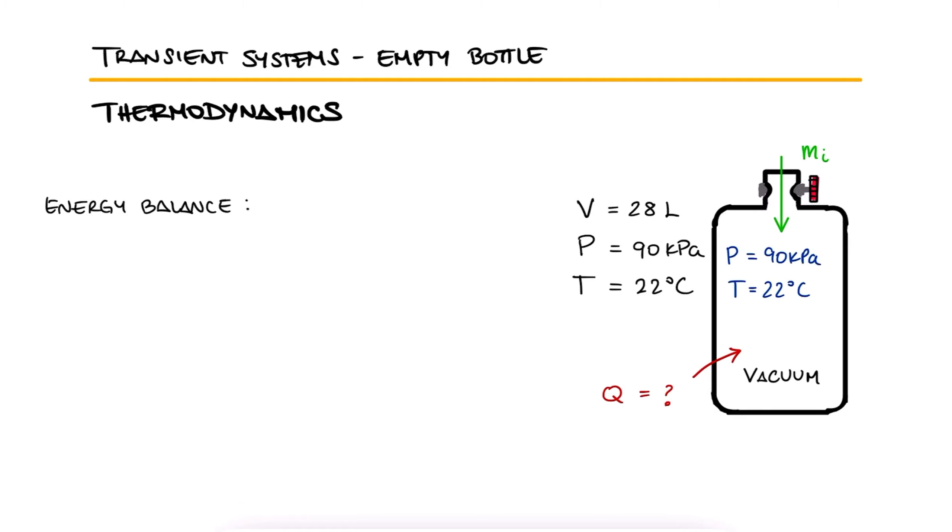The energy balance equation tells us that the energy change is equal to the final energy minus the initial energy. The energy change is the heat that went in, assuming it went in for now, plus the mass that went in with its specific enthalpy. The final energy is the final mass M2 times its specific internal energy, and the initial energy is zero since the bottle was completely empty.